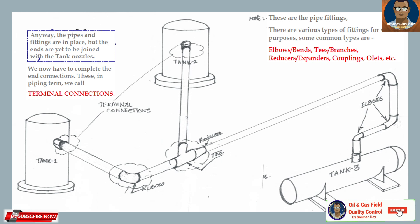Elbows are used for bends. T's are used for branches. Reducers are used for changing connection sizes. Couplings and olets are also used — these are all for branch connections.